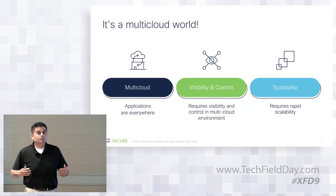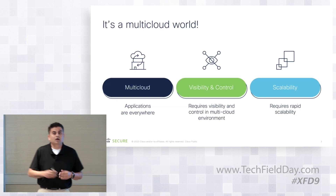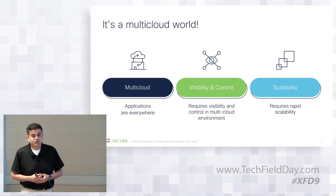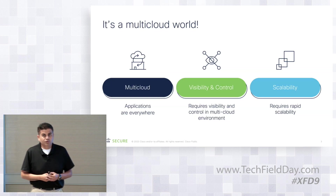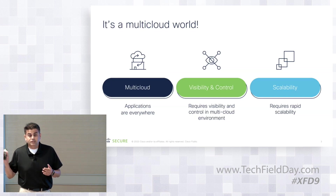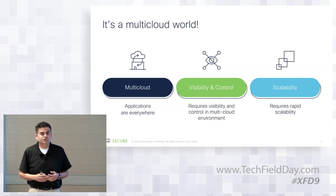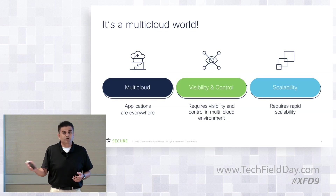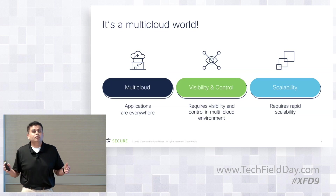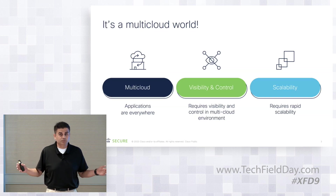When we talk to these customers, the biggest pain they call out is the single pane of glass, the single unified policy, and complete visibility and control. The other important item is scalability. All those applications in the cloud are using agility, auto-scale, resiliency, multi-availability zone, multi-AZ, multi-region applications, and it is really important for customers to have a solution that can provide complete visibility of their entire infrastructure.